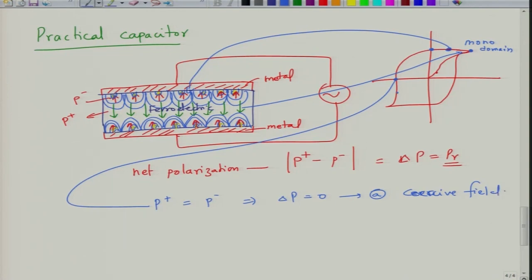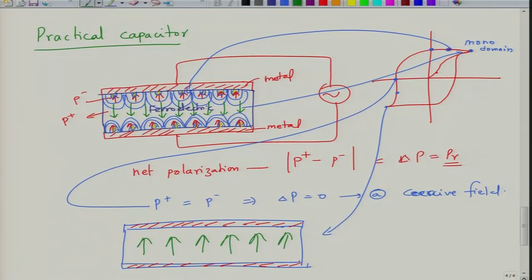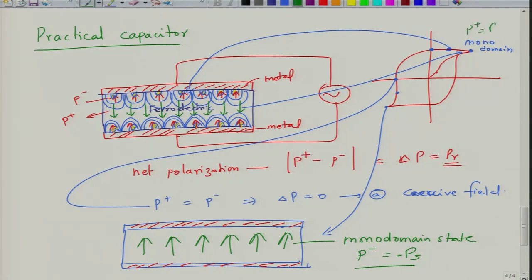When you continue reducing the field and apply it in the opposite direction, you will reach a mono-domain state again but in the opposite fashion, where the polarization vector is all in the opposite direction and p_minus equals p_s. The whole cycle of domain growth and formation repeats itself.